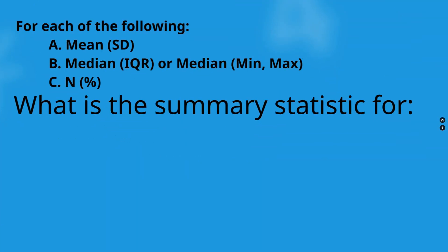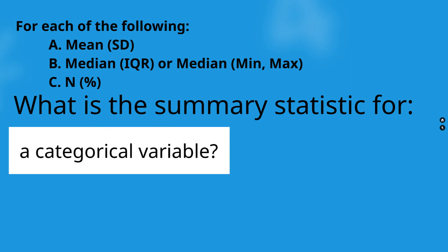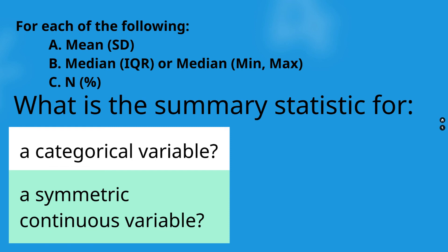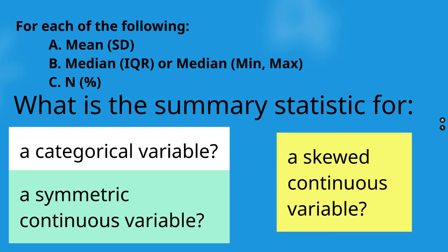For each of the following, select A, B, or C: A is mean and standard deviation; B is median with IQR, or median with range/minimum and maximum; C is N and percent. Determine the best summary statistic for a categorical variable, a symmetric continuous variable, and a skewed continuous variable. For a categorical variable, the correct answer is C — N and percent. Always report the N and percent.